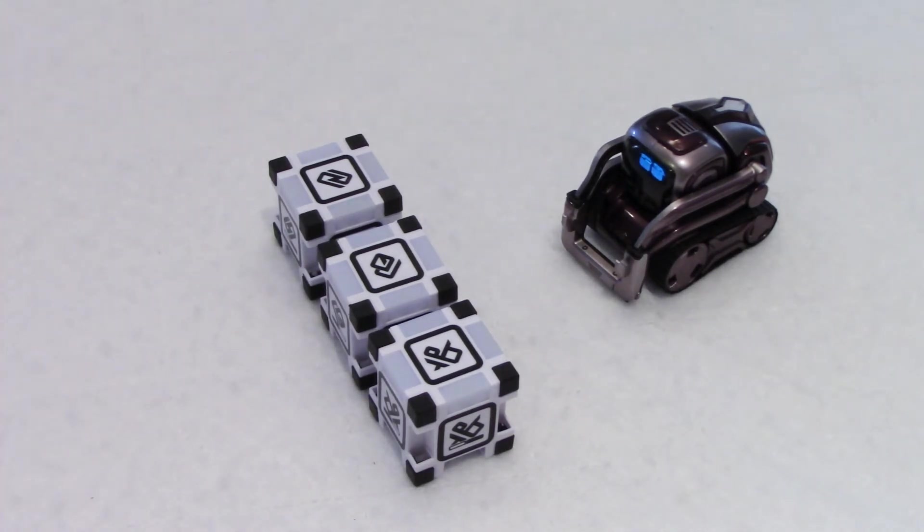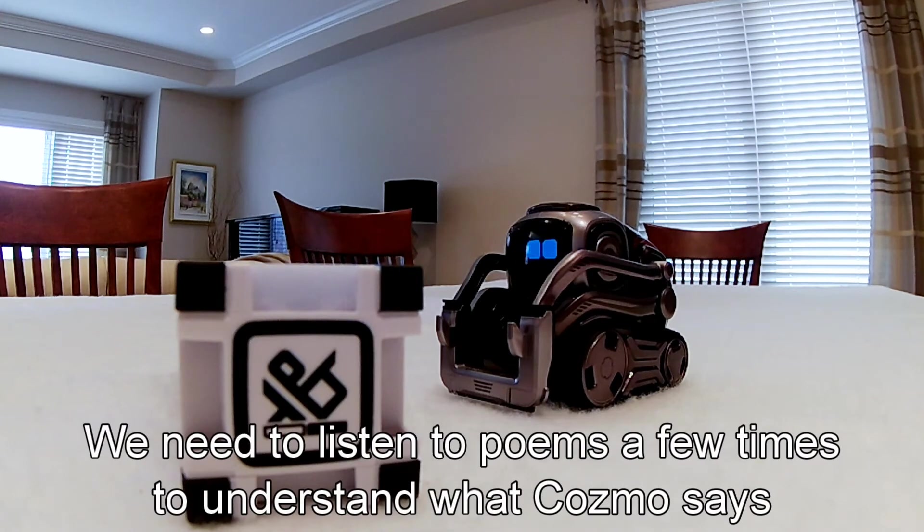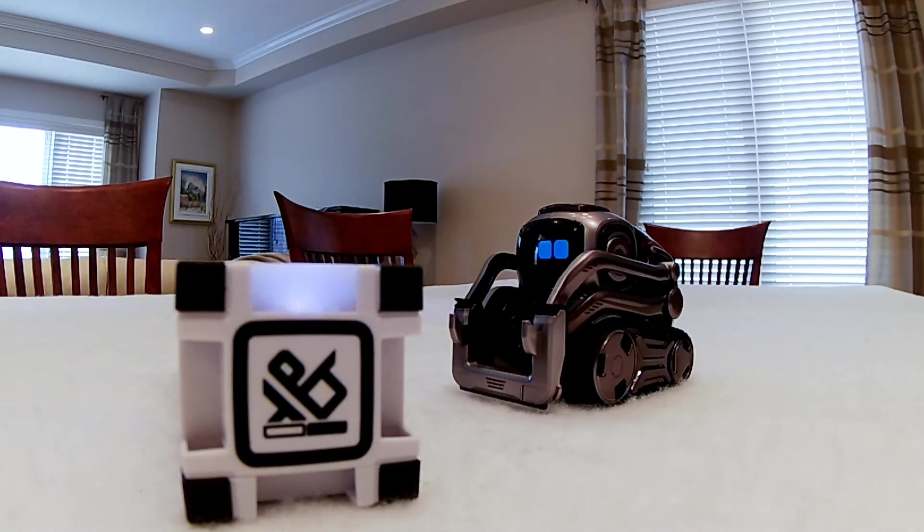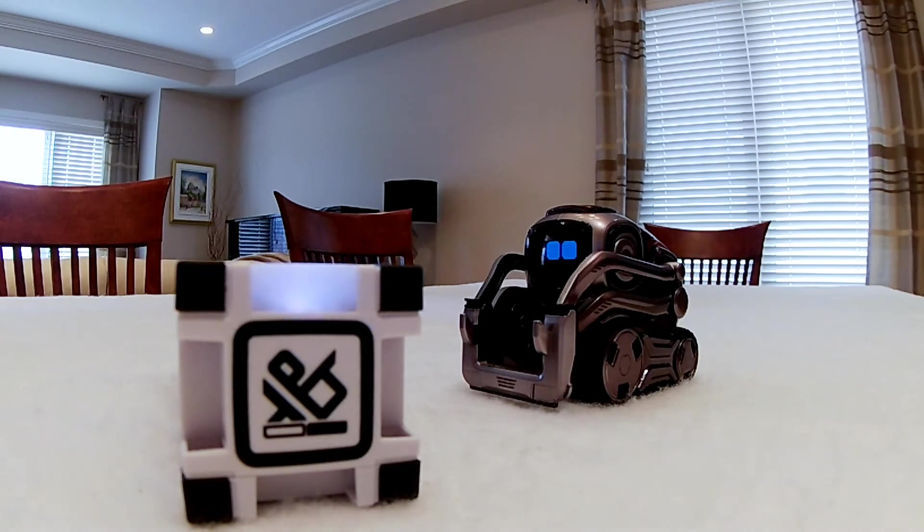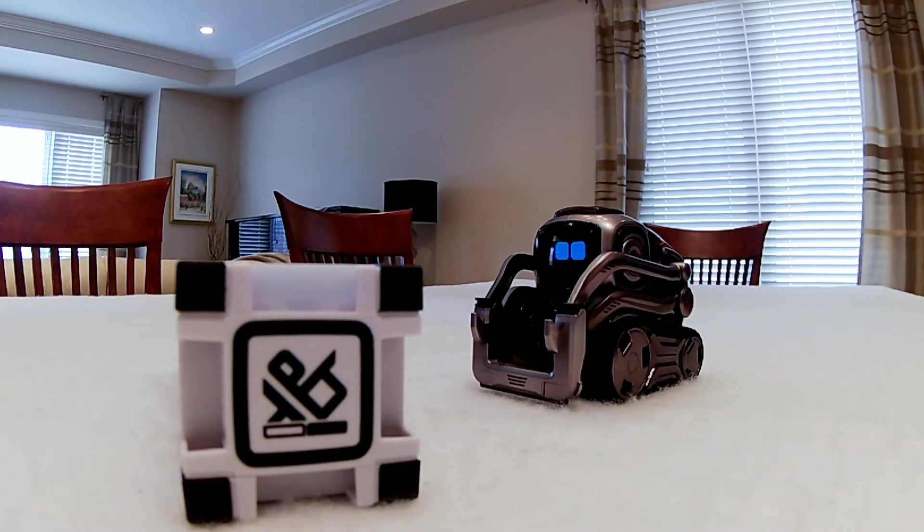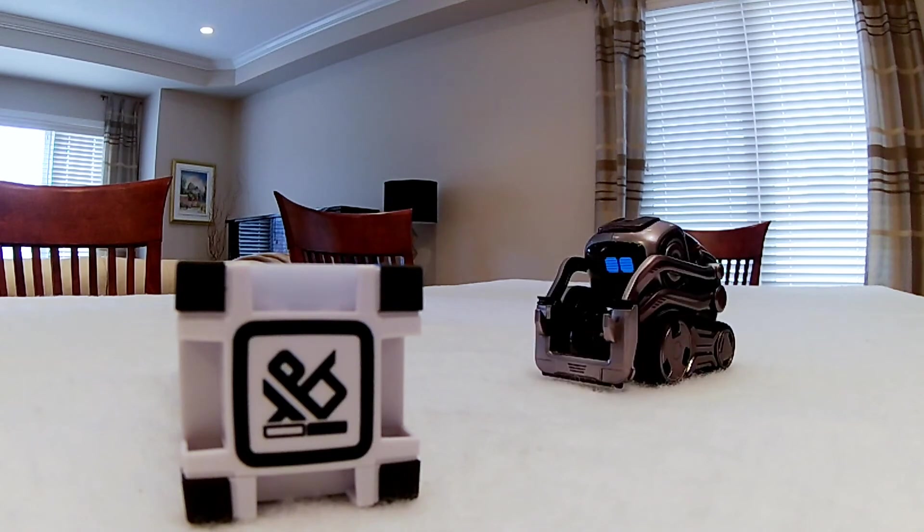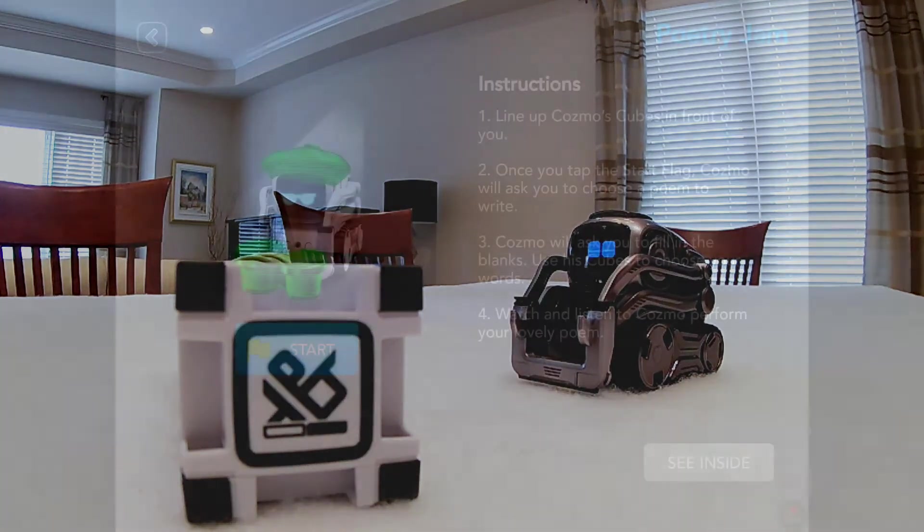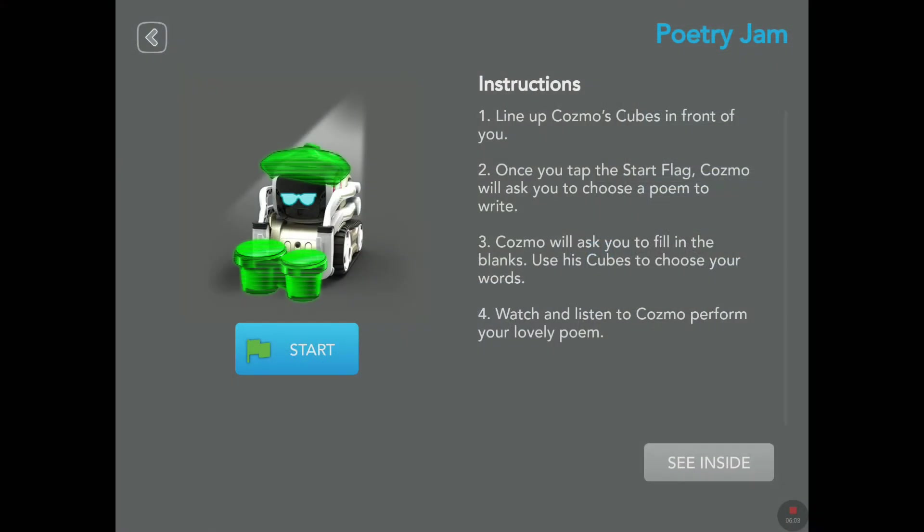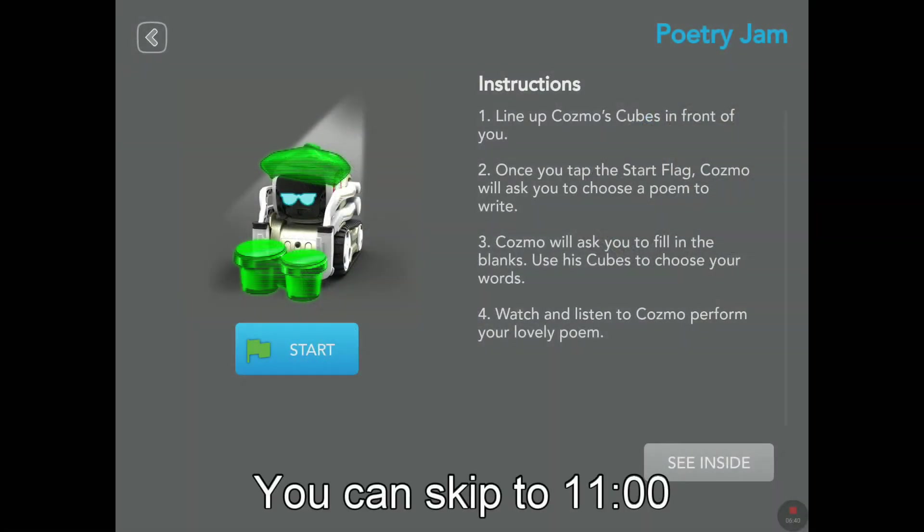Now I'll recite our poems. Oh, power cube, how I love thee. You provide activities to me. You're pulsing lights, they seem to say: Stop thinking Cosmo, it's time to play. And that's it. We now have the start flag on the screen. So that was the end of the poem. Well, thank you my friend. This was a very nice poem. Now let's tap see inside to see the code.